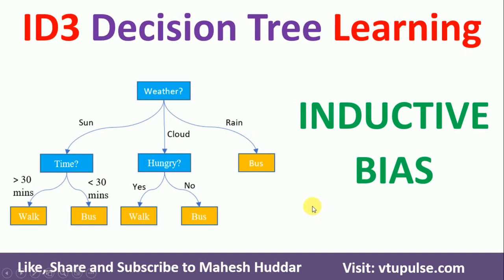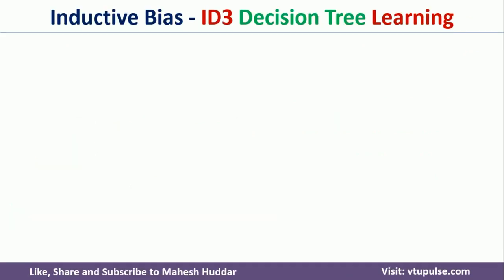In this video, I will discuss inductive bias with respect to the ID3 decision tree learning algorithm. In the previous set of videos, I discussed how to use the ID3 decision tree learning algorithm to construct the tree for a given set of training examples. Follow the link in the description below to understand how to build or construct decision trees using ID3 algorithm. In this video, we will concentrate on the inductive bias in ID3 decision tree learning algorithm.